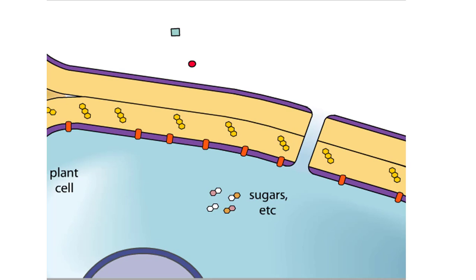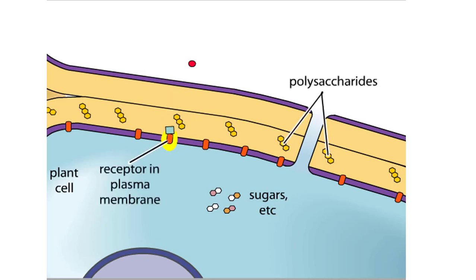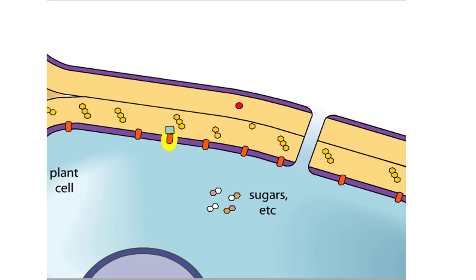A plant may recognize molecules of a pathogen directly or indirectly. Some pathogen molecules, for example, bind directly to plant receptors in the plasma membrane. Others, such as enzymes, break down molecules within the plant cell wall, and then these broken-down products bind to plant receptors.